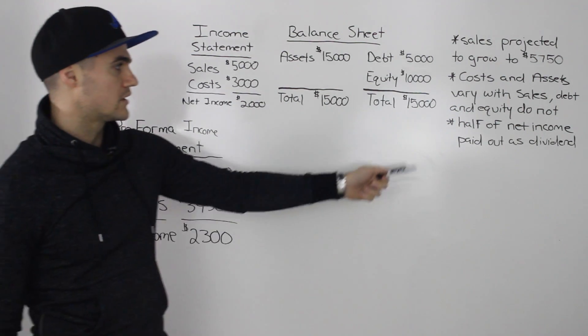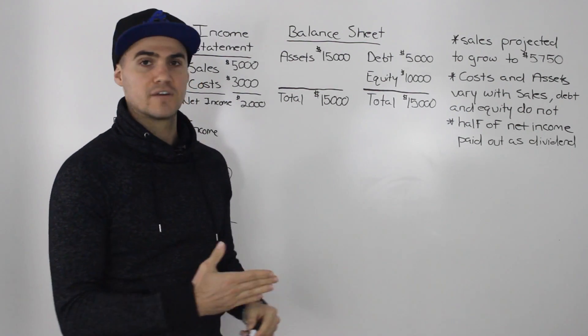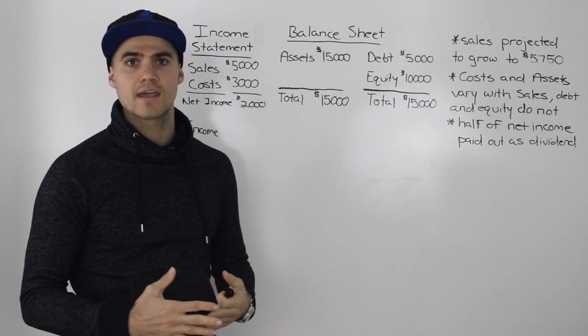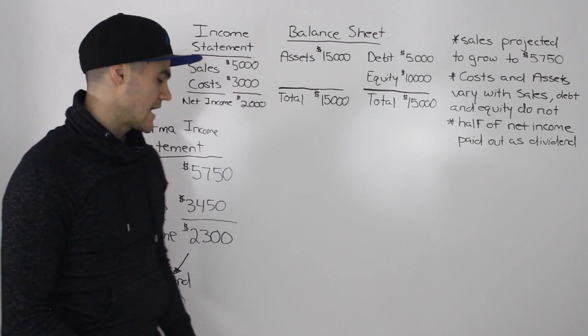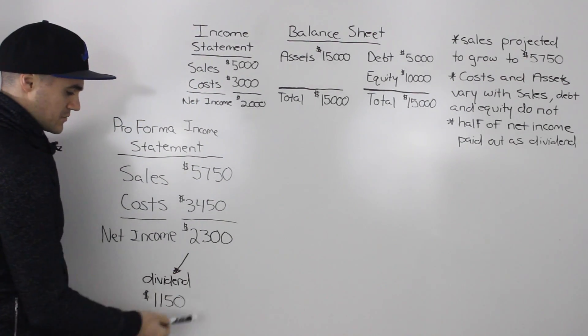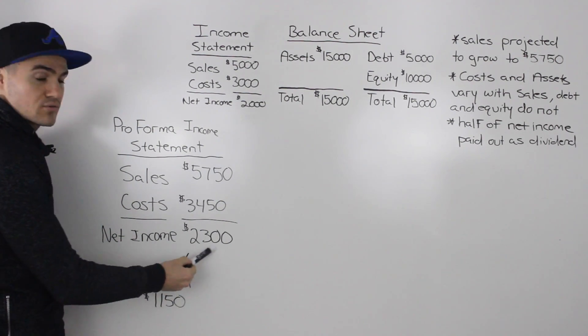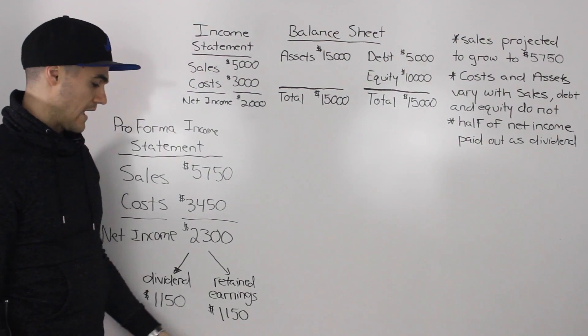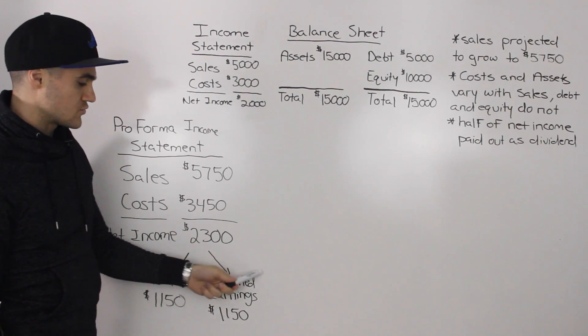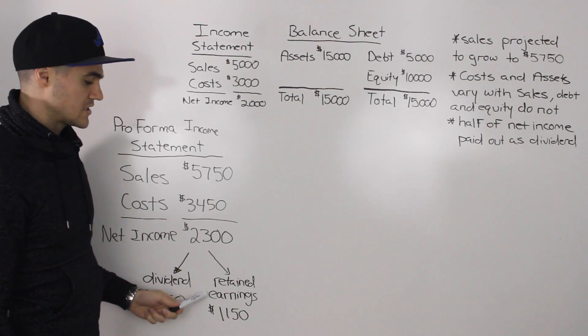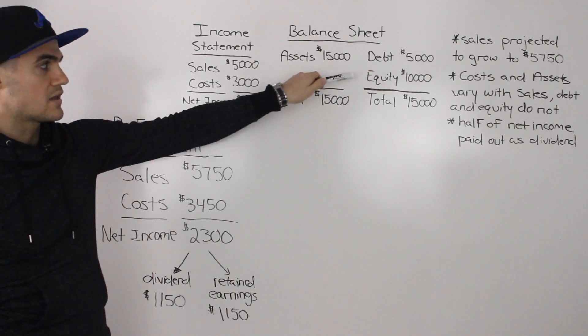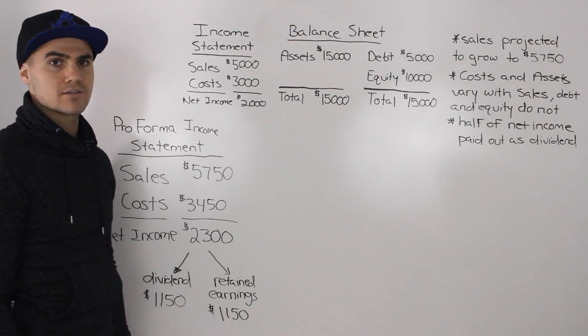And we're also told in the information that half of net income is paid out as a dividend. So that means that half of this net income is paid out as a dividend, $1,150, which is half of $2,300. And then the other half, $1,150 is retained in the company as retained earnings and it flows into the equity section of the balance sheet.